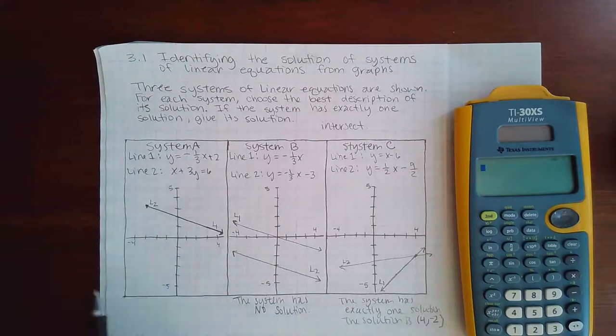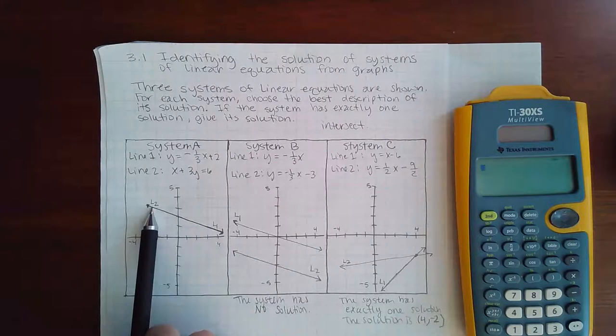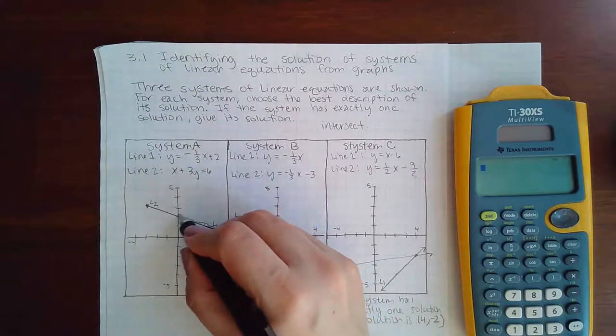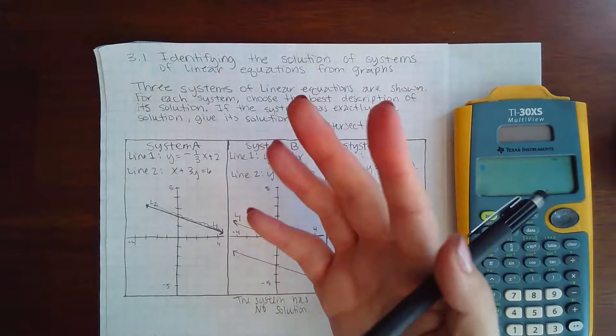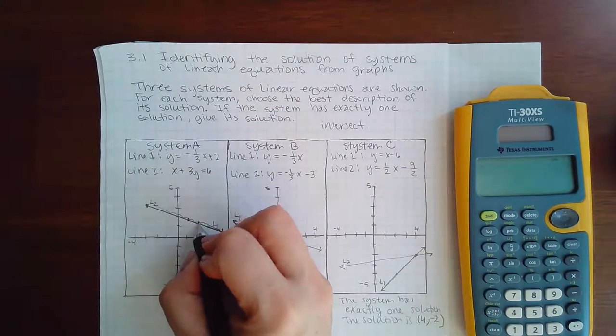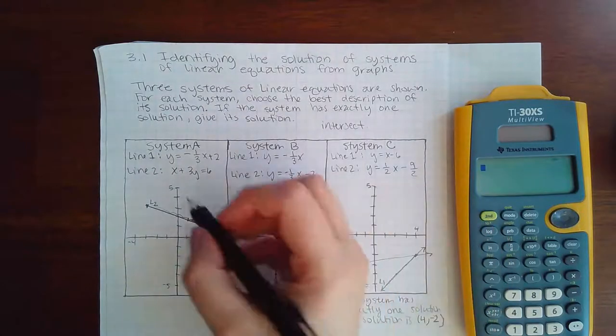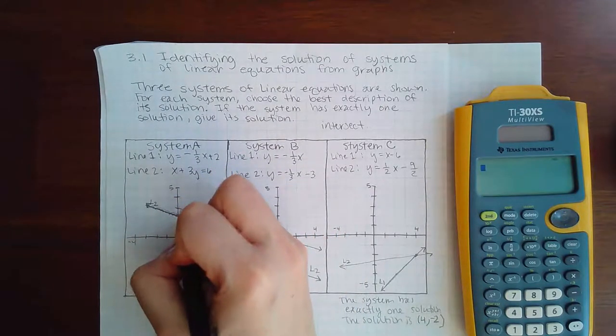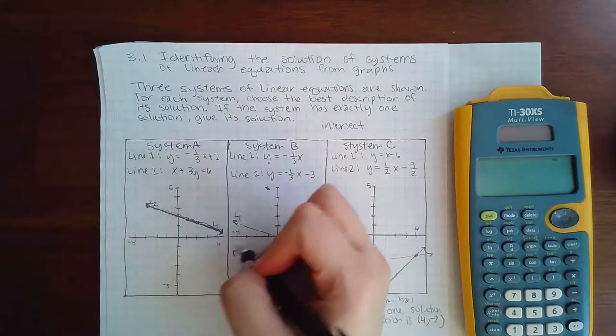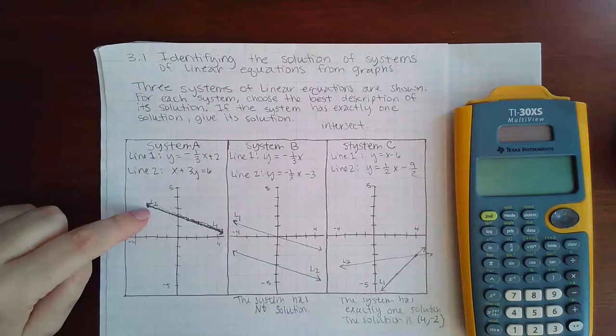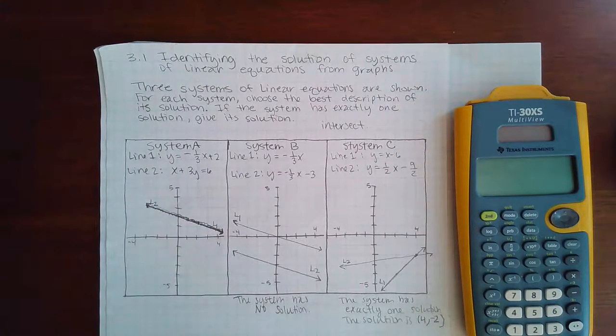But then you've got this other graph over here where L1 is on top of L2. And so that means that these guys touch everywhere. I think I've mentioned in a previous video, if you watched it, that just between here and here is an infinite number of points. So you can imagine that between here and here is an infinite number of points. And then the fact that there are arrows going that direction and this direction means there's even more points.